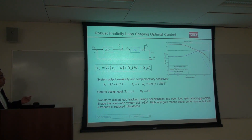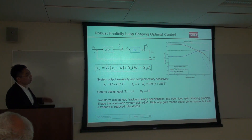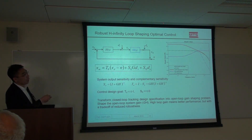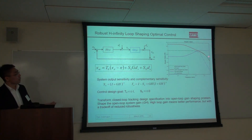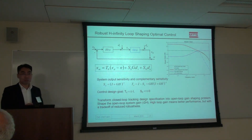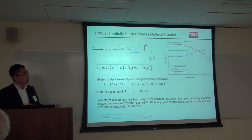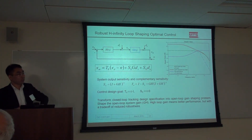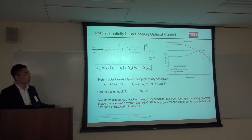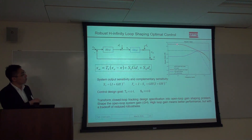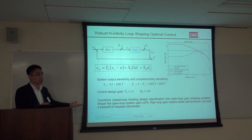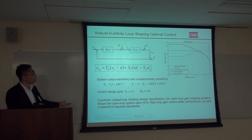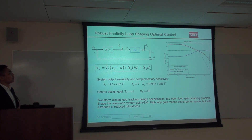We transform the closed-loop tracking problem into an open-loop gain shaping problem. At lower frequencies where we want high tracking performance, we shape the loop gain to be high. At higher frequencies — where modeling uncertainty and measurement noise are larger — we reduce the loop gain sharply so the system is robustly stable. Shaping the gain too aggressively at high frequency would cause the controller itself to go unstable due to small modeling uncertainties.